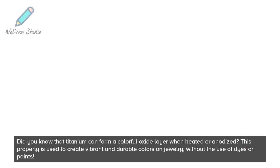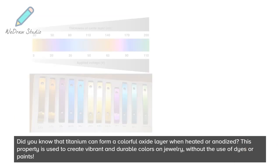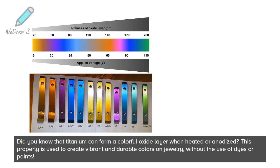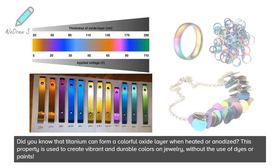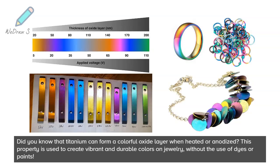Did you know that titanium can form a colorful oxide layer when heated or anodized? This property is used to create vibrant and durable colors on jewelry, without the use of dyes or paints.